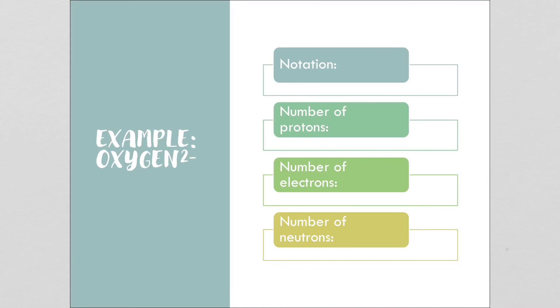Our next example is oxygen with a minus 2 charge. That means that it has two extra electrons to give it that minus 2 charge. Its notation is going to be a little different. We have oxygen, 16 and 8 for the atomic number and atomic mass. The number of protons is 8, but because there are two extra electrons to give it that negative charge, the number of electrons is 10, and the number of neutrons is 8.